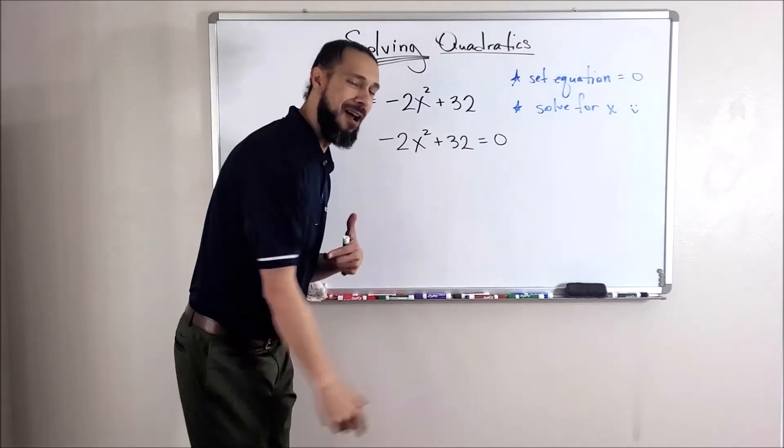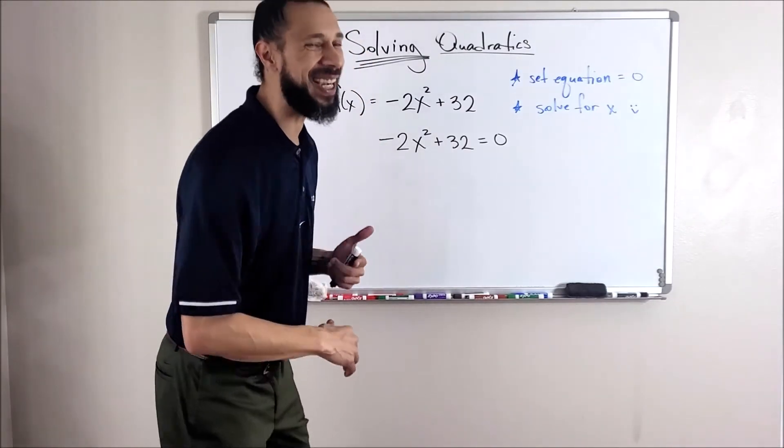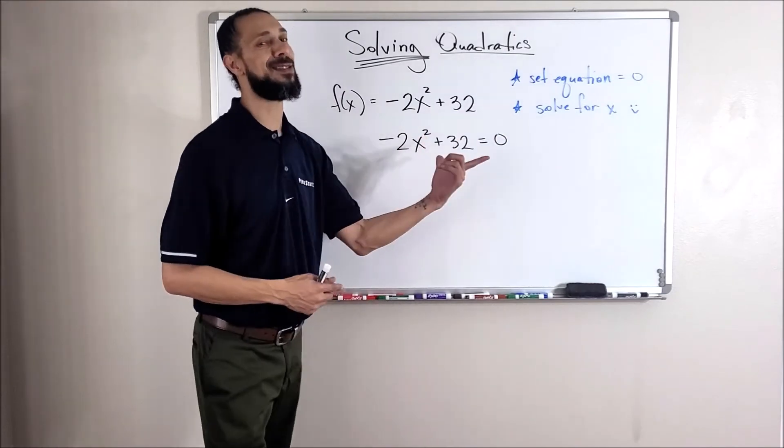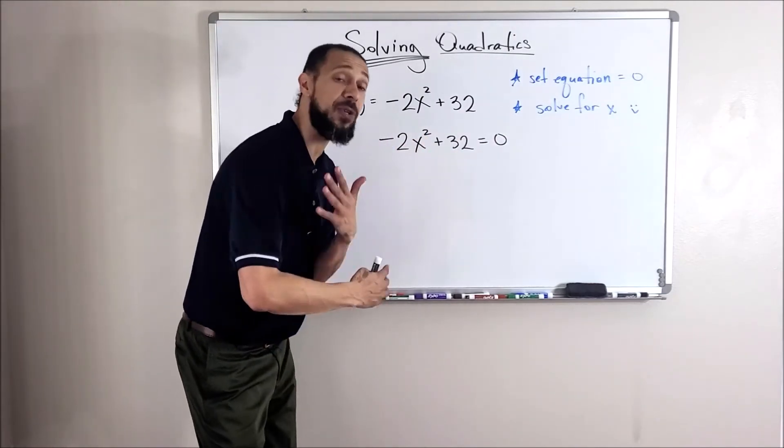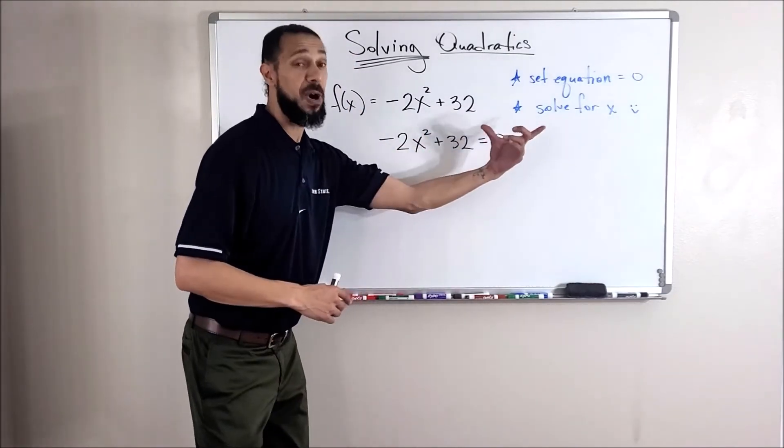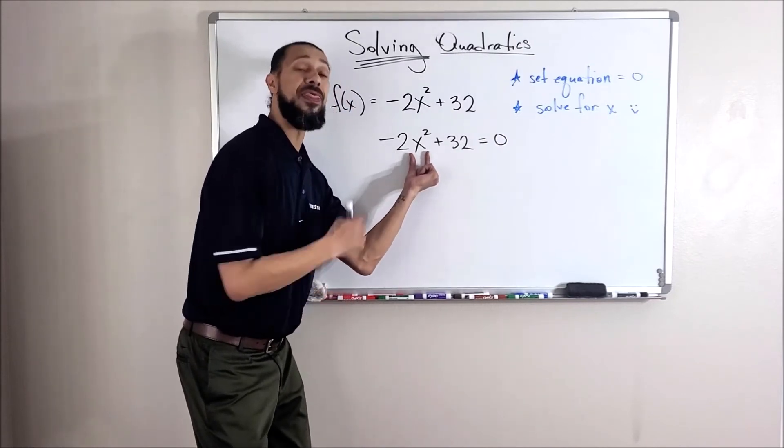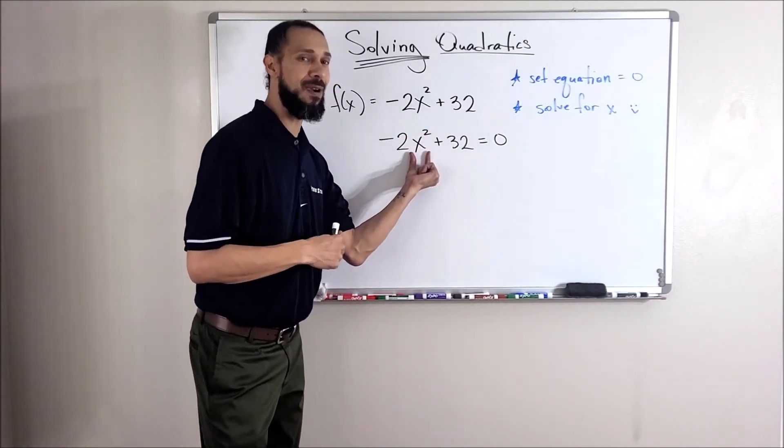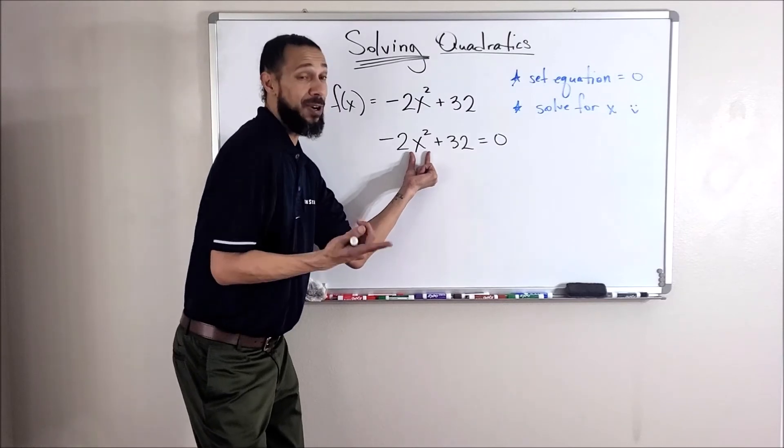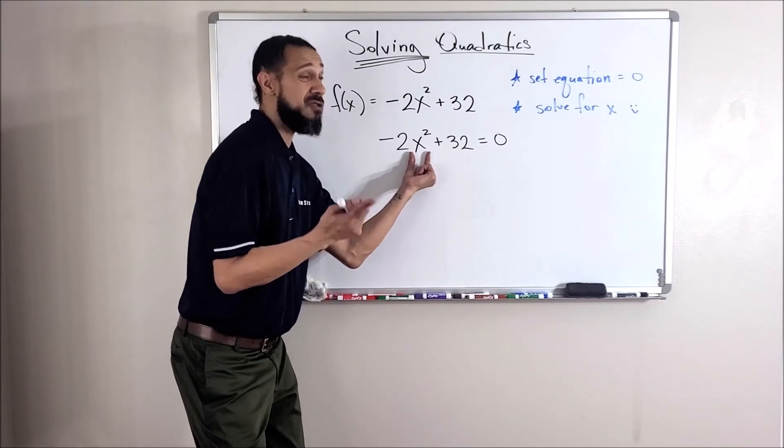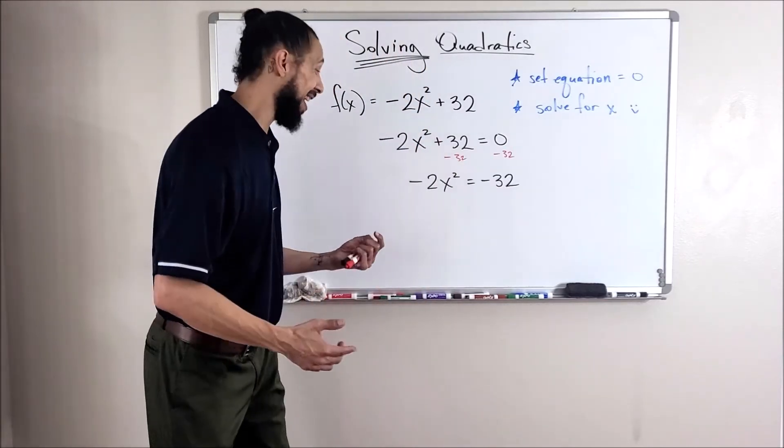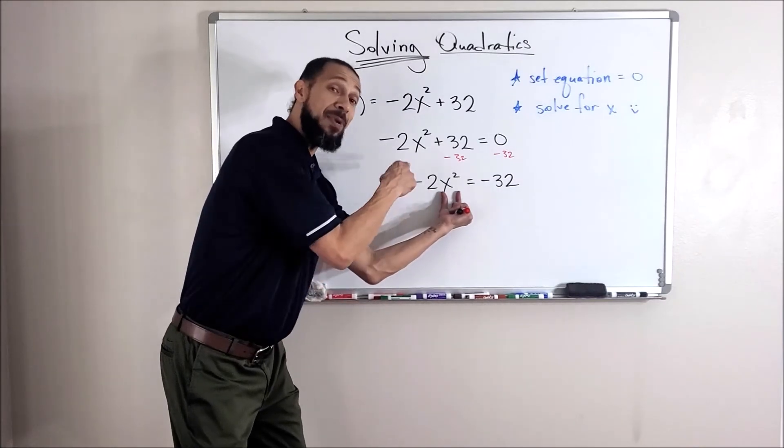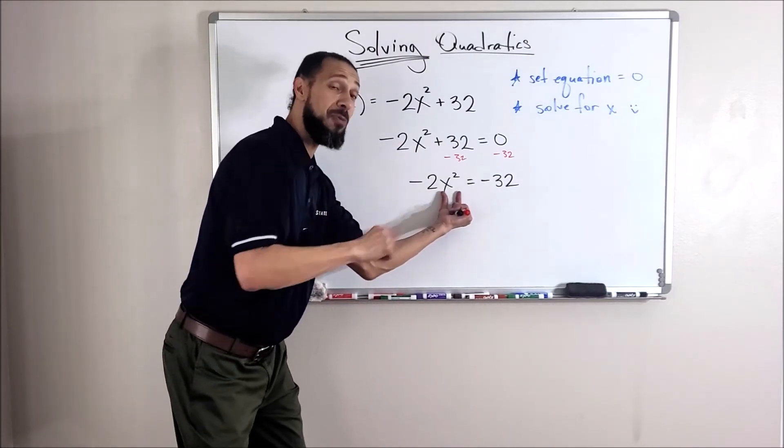First step: set it equal to zero. Exactly right. Now, the next step sounds simple enough, but that's going to look different as we move along. Solving for x here is getting this thing alone so I can do a square root. So the first thing I got to get rid of is that 32. Just like that.